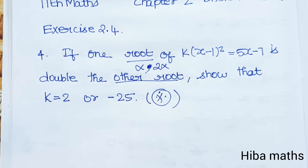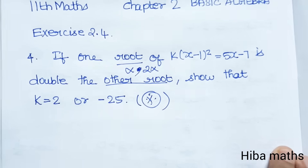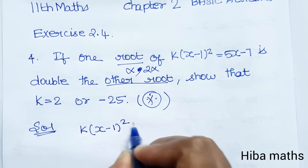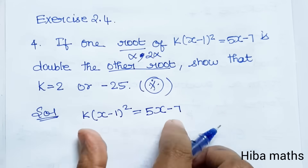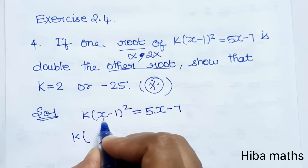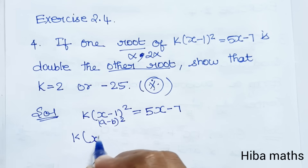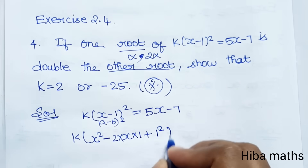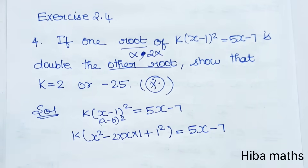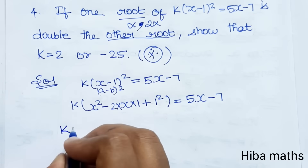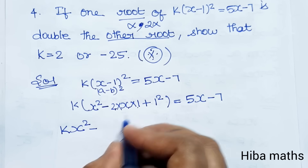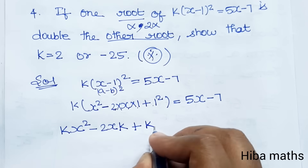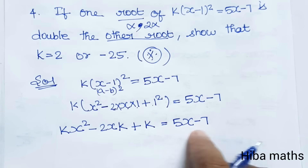First, expand the polynomial using the formula k(a-b)² = k(a² - 2ab + b²). Here a is x and b is 1, so we get k(x² - 2x + 1) = 5x - 7. Multiplying k inside: kx² - 2kx + k = 5x - 7.